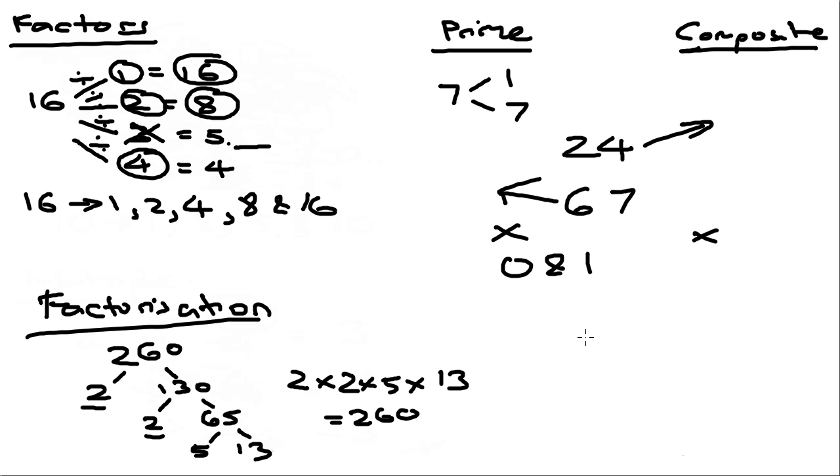The last thing we're going to look at for this video is something called index notation. If you multiply a number by itself, for example 5 times 5, you can actually express it as 5 to the power of 2 or in this case we call it 5 square. Or if you multiply a number by itself 4 times, you can express it as 5 to the power of 4. This only works if you multiply a number by itself. You cannot multiply by a different number and express it this way.